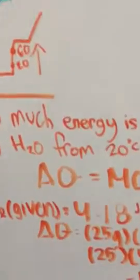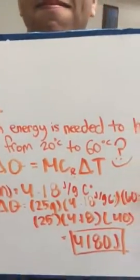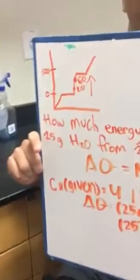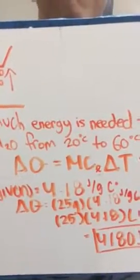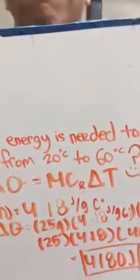So the formula you're going to use is delta Q equals MC_L delta T. C_L is a given, which is 4.18 joules over grams Celsius.